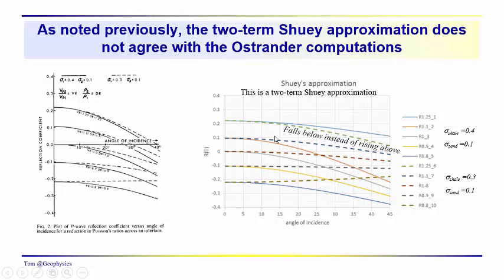When we looked at the two-term approximation, we saw some differences. For the combination of Poisson's ratios 0.3 and 0.1 shown in the dashed lines, instead of rising above the predicted amplitude variation with offset using a dr and dv of 1.25, it actually fell below. We also see that the reflection for vr and dr equal to 1.11 crosses zero at about the right location, but the event comes out much higher and the drop-off is steeper.